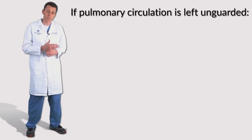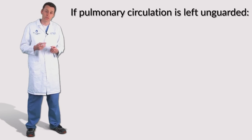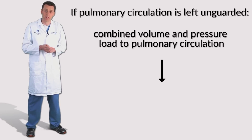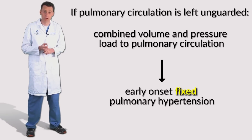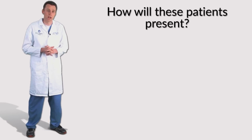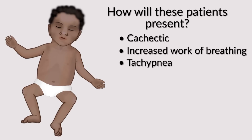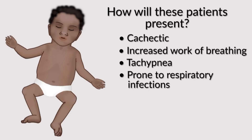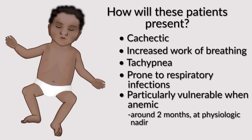If the pulmonary circulation is left unchecked and the defect is not closed, the combined volume and pressure load can lead to early-onset pulmonary hypertension, sometimes even in the neonatal period if there are concomitant lesions. These patients may appear cachectic with increased work of breathing and easy tachypnea. They're very prone to respiratory infections due to increased pulmonary blood flow and are particularly vulnerable when anemic — around two months at their physiologic nadir, anemia combined with increased cardiac demands can cause more profound failure to thrive.